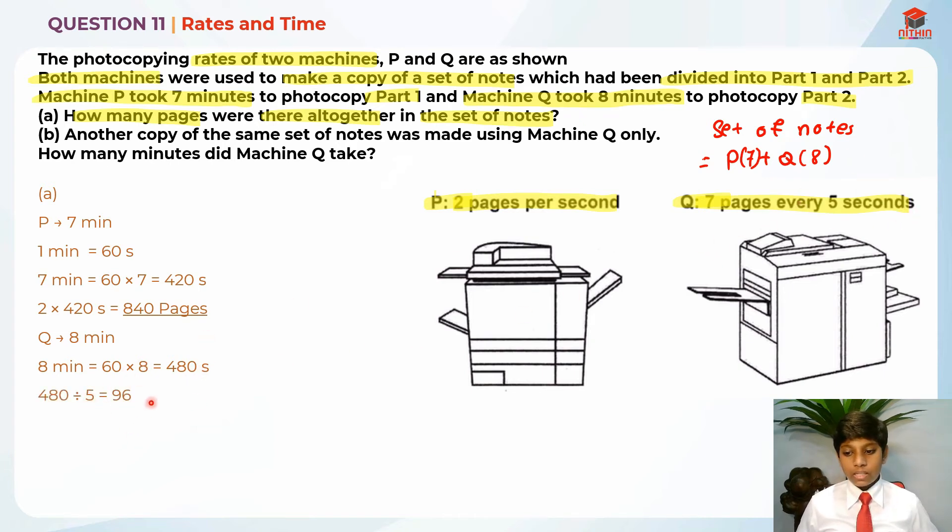So it will give us 96. So I'm going to use this 96 times 7 pages, it will give us 672 pages. And in order to find the total number of pages in the set of notes, we just need to add these two up. 672 plus 840, it will give us 1512. So the answer for part A is 1512.